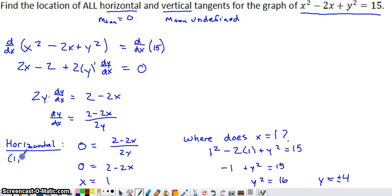Where do we have horizontal tangents? We have horizontal tangents at (1, 4) and at (1, -4). So we have two locations where this graph has horizontal tangents.